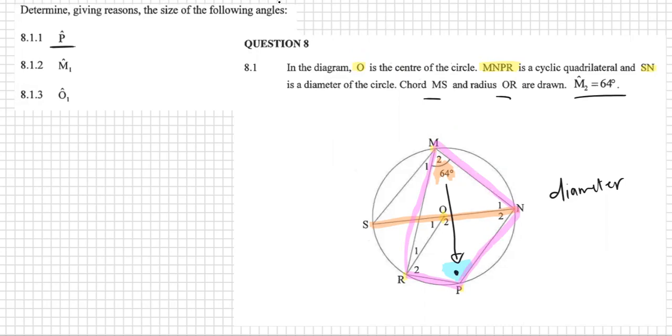Let me just write it. And therefore, for our proof, 8.1.1, angle P is 180 minus 64, which equals 116 degrees. And the reason is opposite angles of a cyclic quad.